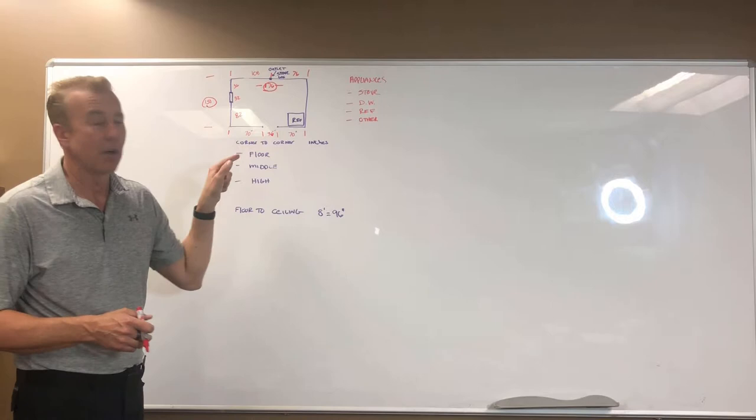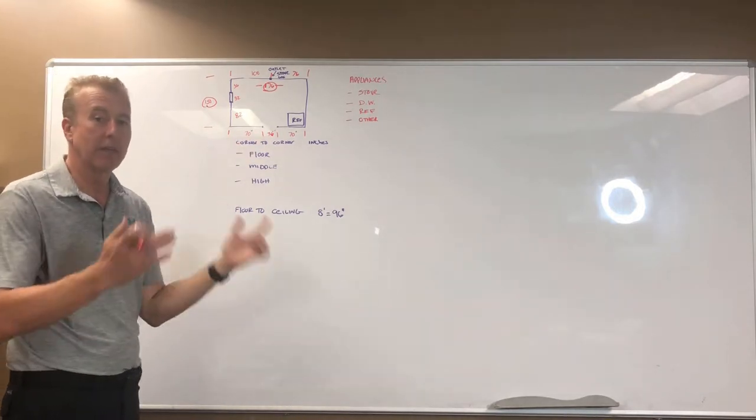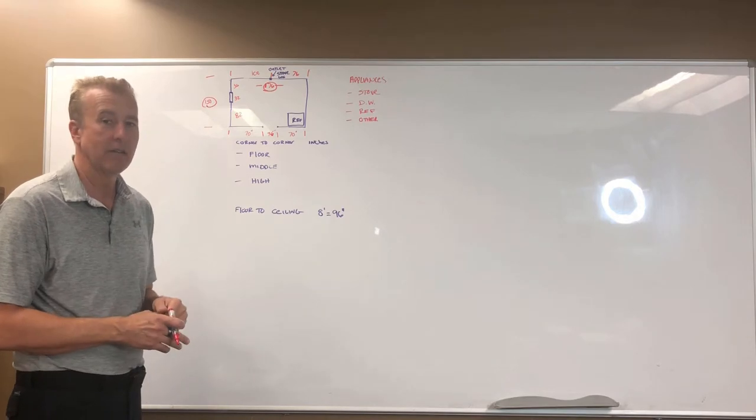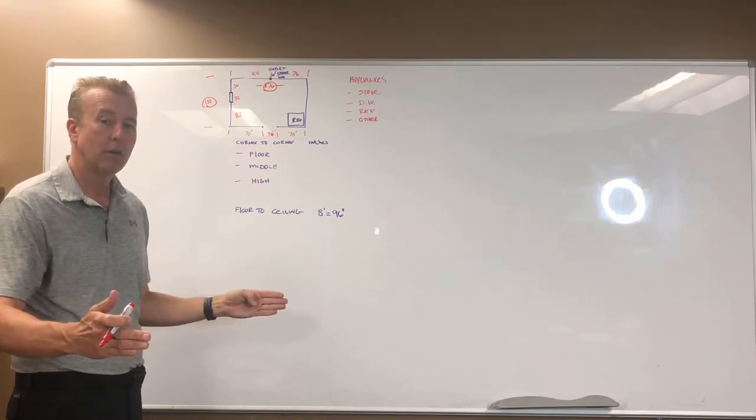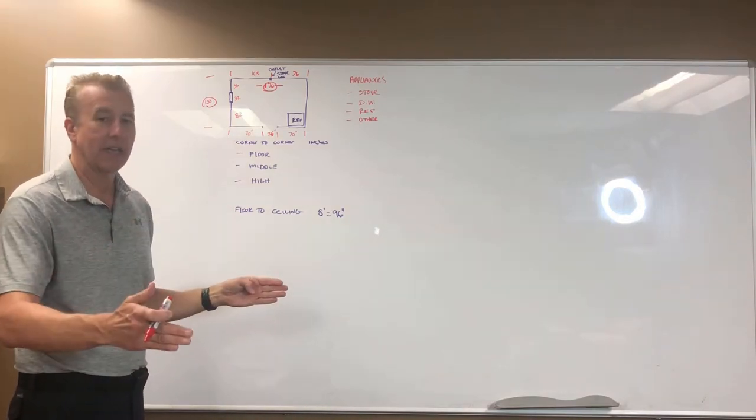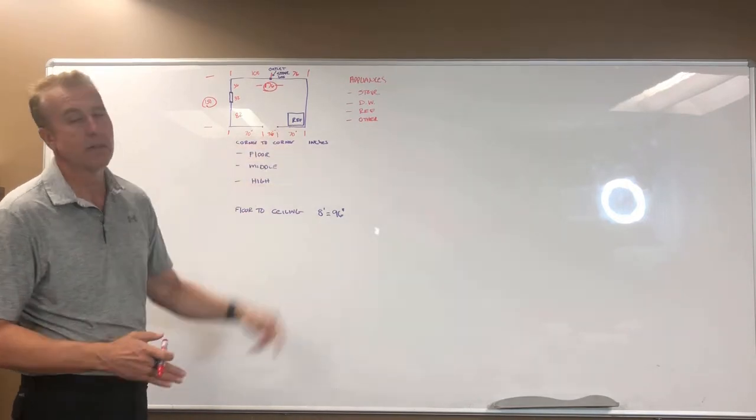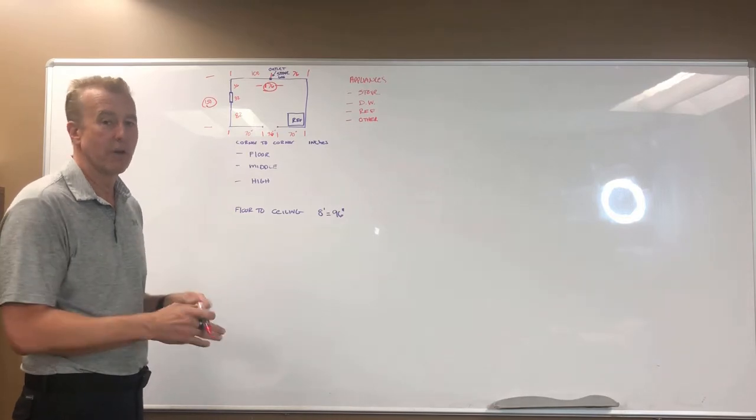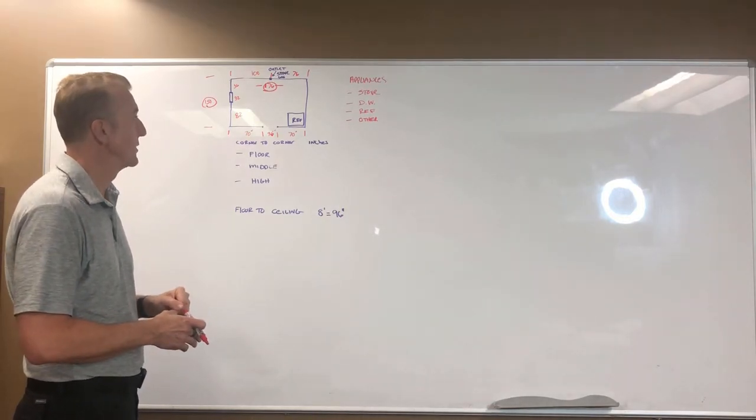Same thing when we get to doors. On the bottom when I have doors they typically have casing. So I like you to measure from the corner to the door casing, the distance across the door outside the casing to outside the casing, and then from there to the other corner. And again they should add up to the total distance from corner to corner, and they do in this case.